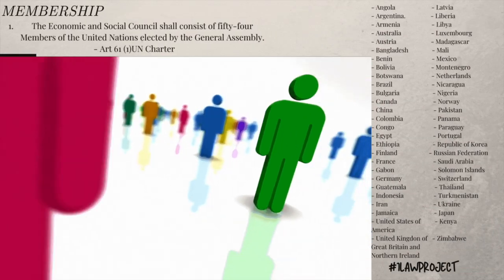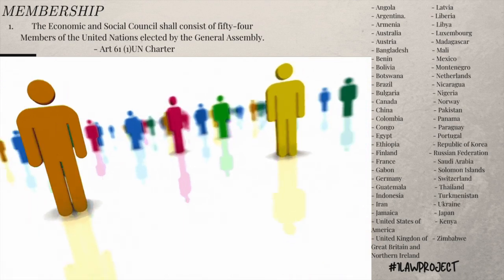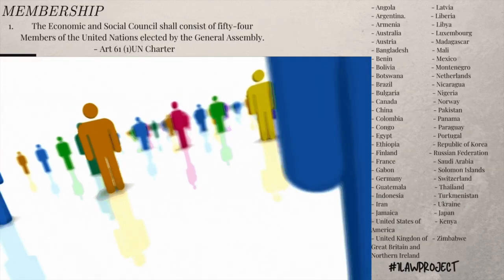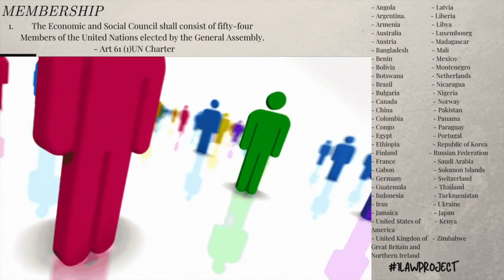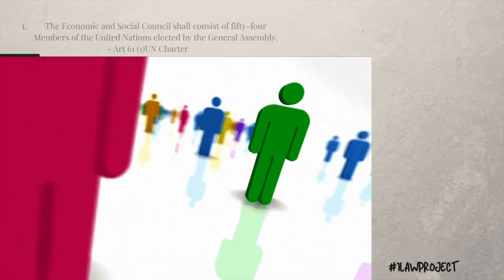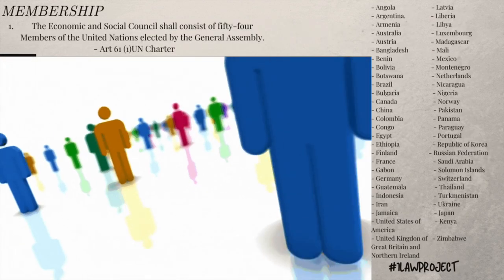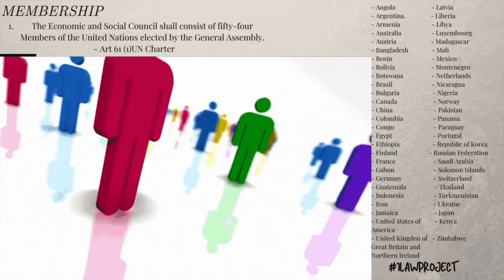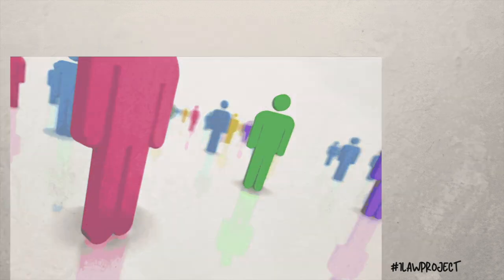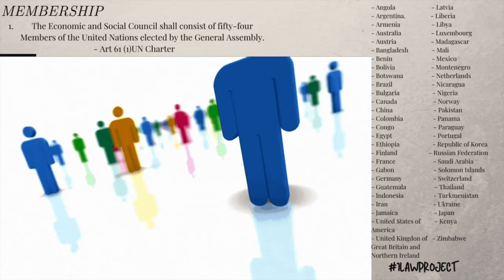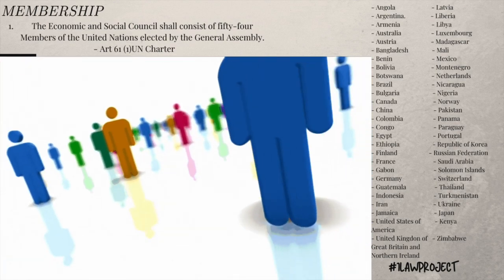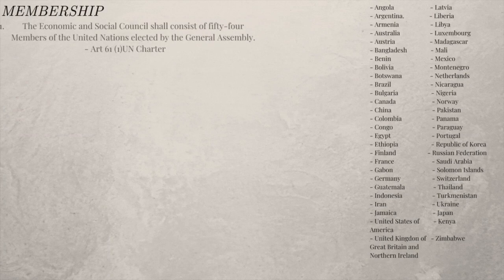According to Article 61.1 of the United Nations Charter, ECOSOC consists of 54 members, and these 54 members are drawn out of the 193 member states of the United Nations. The members of ECOSOC are elected by the General Assembly for an overlapping three-year term. Each elected member is entitled to have one representative on the council who has one vote on issues deliberated on at the council.